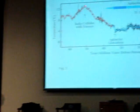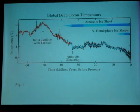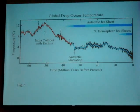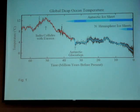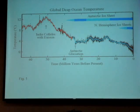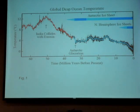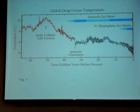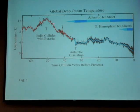As CO2 increased, the temperature increased. Then 50 million years ago, India crashed into Asia, which began to push up the Himalaya Mountains and the Tibetan Plateau. So the source of CO2 from subduction was reduced, and the sink was increased because of the weathering of the Himalaya Mountains.